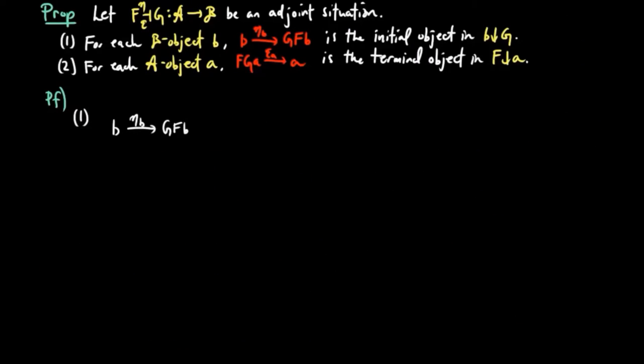To prove one, we claim that given some B over G object F, then there exists a unique amorphism given by epsilon A composed with F, such that eta B followed by G on epsilon A composed with F is F. In other words, we want to show that the diagram commutes, and moreover, the amorphism epsilon A composed with F is unique.